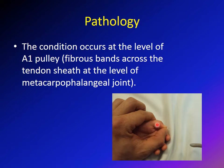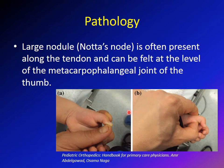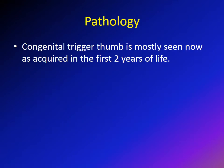The pathology is at the level of the metacarpophalangeal joint where the A1 pulley is, and it is a mismatch between the A1 pulley size and the flexor pollicis longus tendon. Usually there is a nodule at the level of the flexor pollicis longus — called Notta's nodule — which is in the tendon and can be felt at the level of the metacarpophalangeal joint. It is easily felt in most cases.